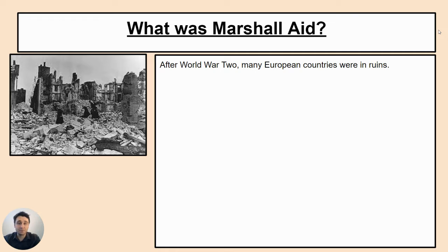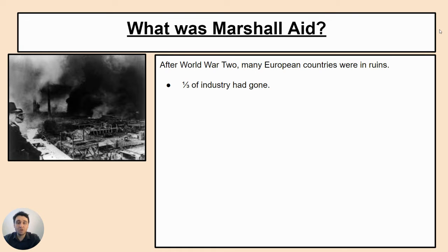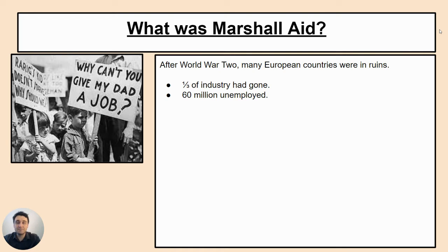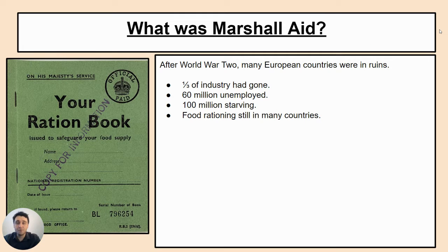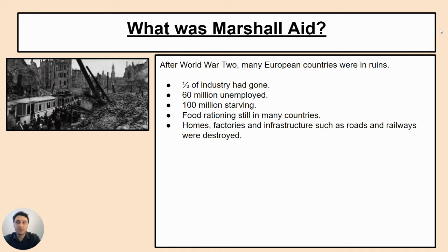Some examples of the devastation: a third of industry across Europe had gone, 60 million were unemployed, 100 million were starving, and food rationing was still in place in many countries. For example, in England, rationing didn't stop when the war was over — it continued for many years after. Homes, factories, and infrastructure such as roads and transport were also destroyed.